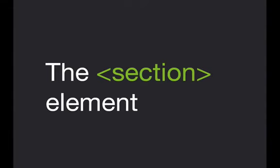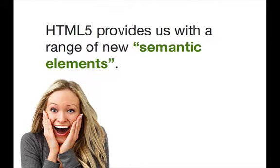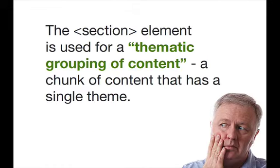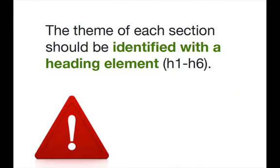First of all, I want to talk about the section element. As you all probably know, HTML5 gives us a wide range of new semantic elements. These include things like header, nav, section, article, aside, the newly introduced main element, footer, figure, and figcaption. The section element is used for thematic grouping of content according to the spec — basically a chunk of content that has a single theme. The theme of each section should be identified with a heading element, H1 to H6. That means every time you introduce a section, you should theoretically introduce a heading as well.